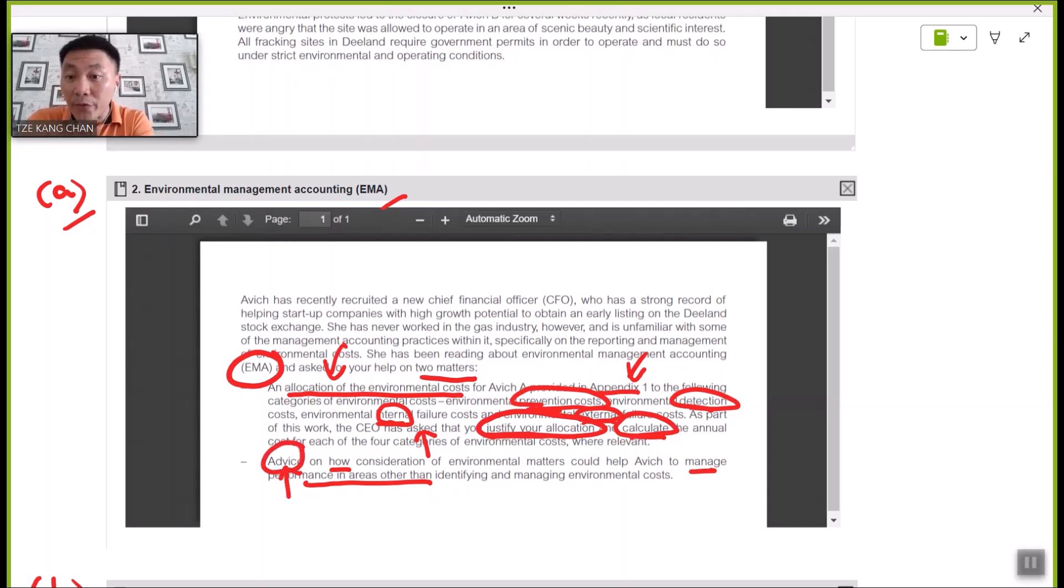What the real challenge comes into is your advice to the company on how the consideration of such environmental related information will help to manage the performance of Avich, other than just identifying and managing the cost. You have to talk about a broader scope of application, just like the earlier part of the video highlighting how such awareness of environmental related information appears and applies into planning, decision-making, and performance measurement. These are the typical ways to relate the fundamental knowledge I discussed earlier in responding to part A.